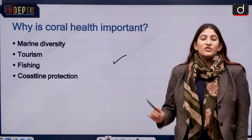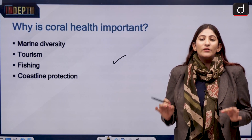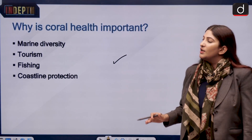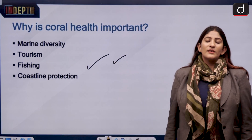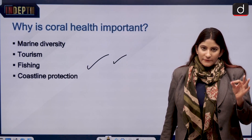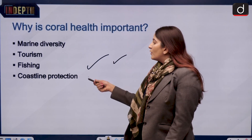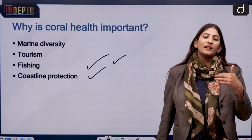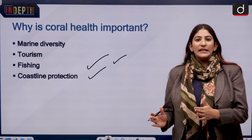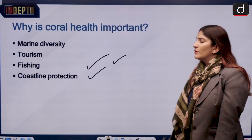Corals are important for tourism — places with thriving coral reefs, atolls, and fringing reefs attract many tourists due to their natural beauty. For fishing, many fish species are dependent on corals; removing corals means fish will also disappear, taking a toll on fishermen's livelihoods. Coastline protection is another benefit — the Great Barrier Reef has protected Australia's coast and these reefs break tsunami waves, similar to mangroves.